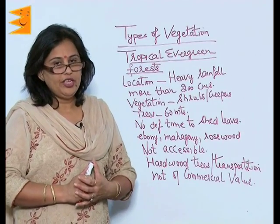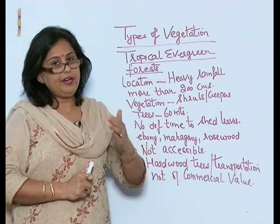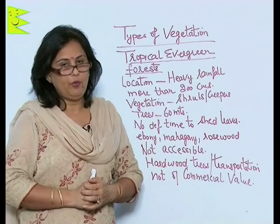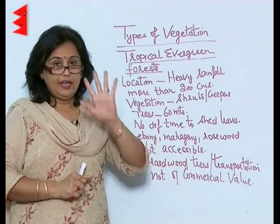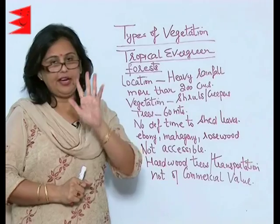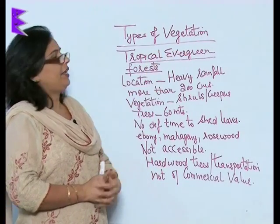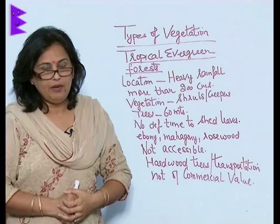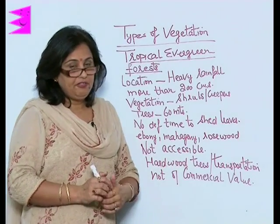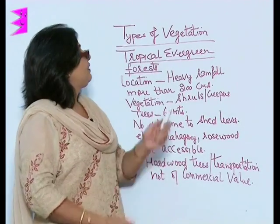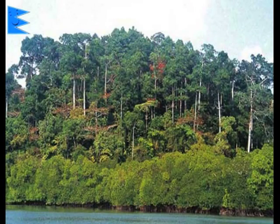Now we shall start with the different kinds of vegetation found in India. There are 5 kinds of vegetation found in India and we shall be picking them up one by one. The first is the tropical evergreen forest.